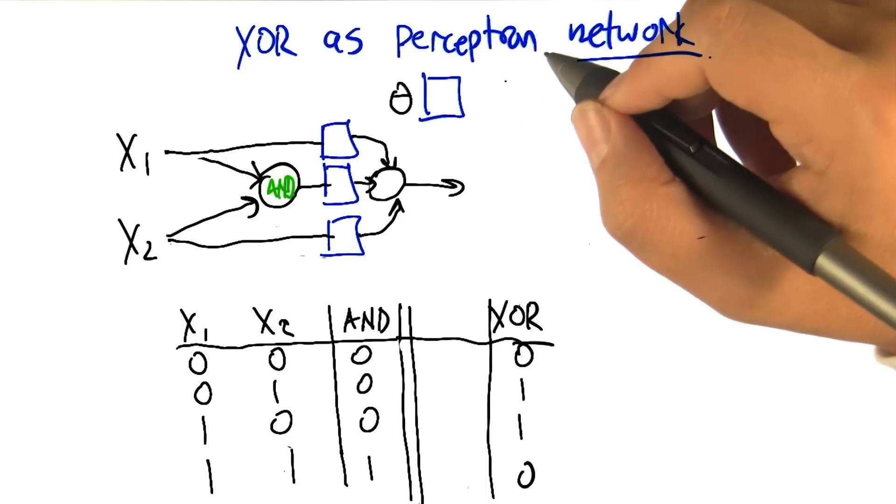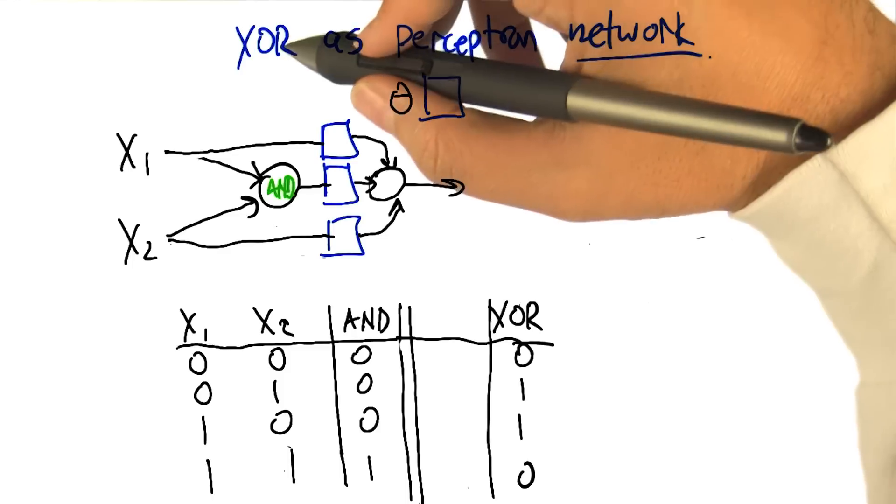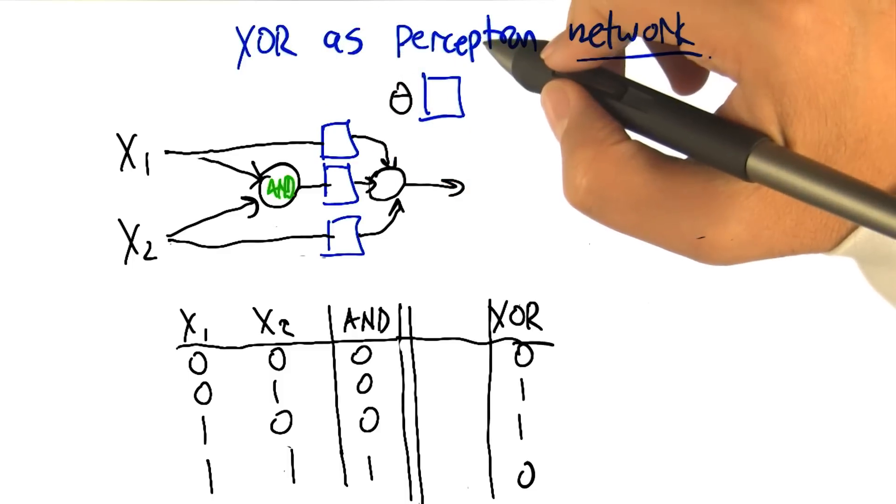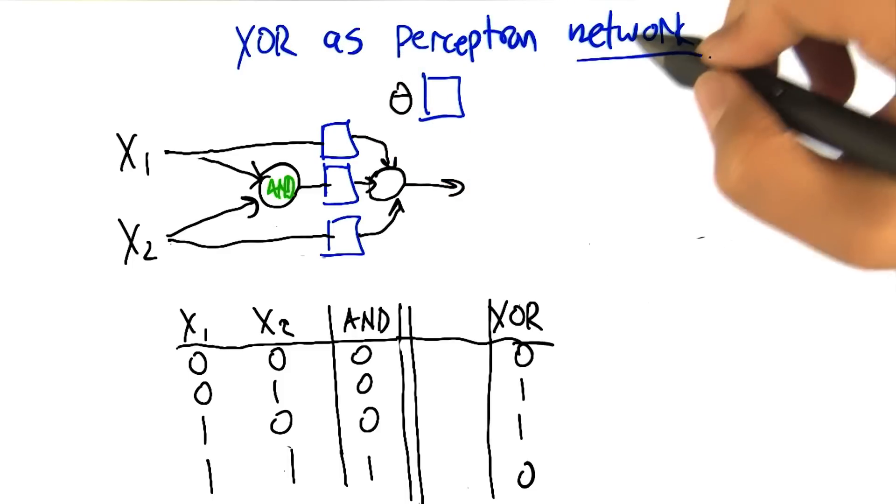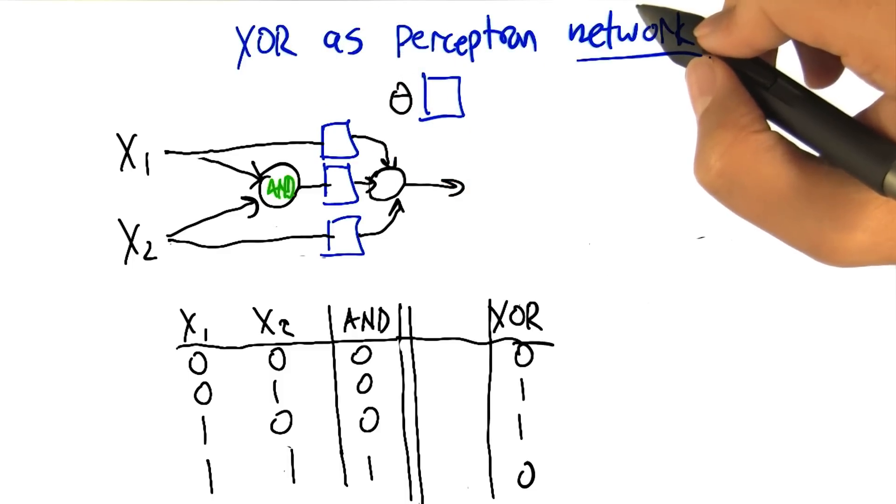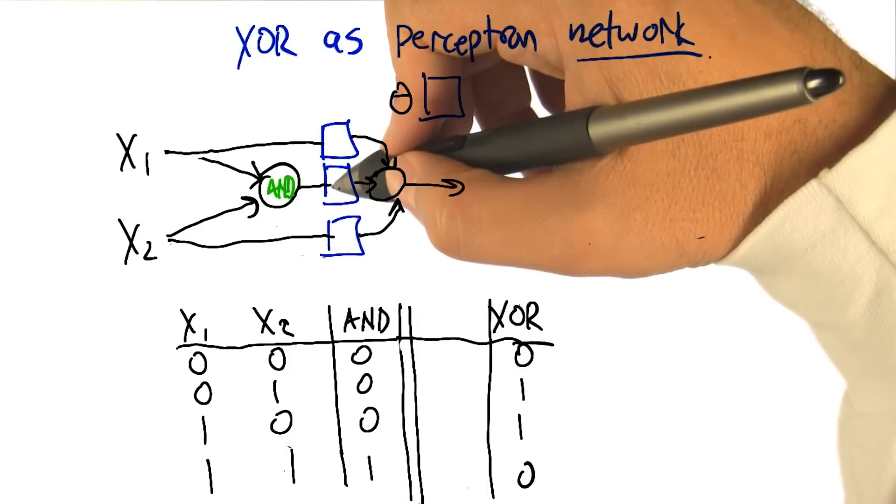All right, so here's what we're going to do. We're going to try to figure out how to compute XOR instead of as a single perceptron, which we know is impossible, we can do it as a network of perceptrons. And just to make it easier for you, here's how we're going to set it up.